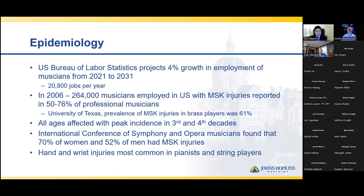It affects musicians of all ages, from students in their elementary and teenage years all the way through the later decades of life, but has a peak incidence in the third and fourth decades as this correlates to the peak performance and expectations of the professional musician, where they are performing more and playing at the top of their game. The International Conference of Symphony and Opera Musicians found that 70% of women and 52% of men had MSK injuries. This disproportionate amount of women compared to men could be attributed to the smaller anatomy of the hand and decreased intrinsic and extrinsic muscle mass in women. Most commonly, pianists and string players have a higher rate of hand and wrist injuries compared to the other musical groups.